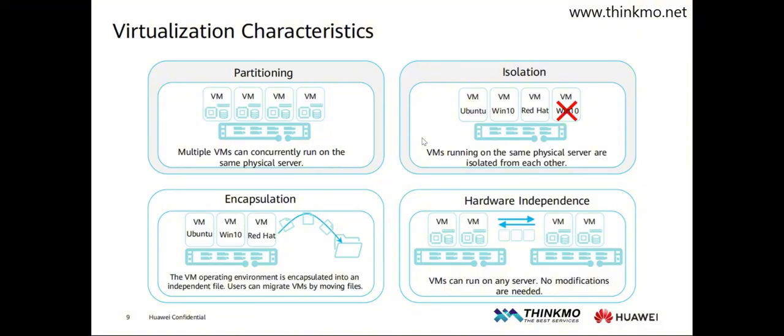Regarding isolation, the main purpose is to prevent a virtual machine crash or failure from affecting other virtual machines. For example, this is like a small room in a building catching fire — one room catches fire, but because the rooms are isolated from each other, it generally won't affect other rooms. Taking a company's server as an example, if a service on one virtual machine crashes, it won't affect the services on other virtual machines running on the same server, ensuring the continuity of other business operations.